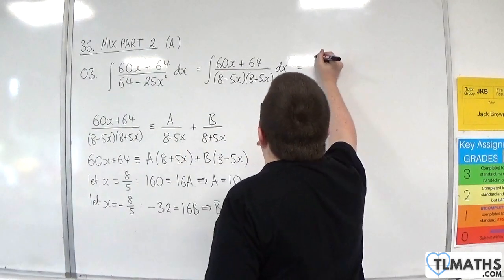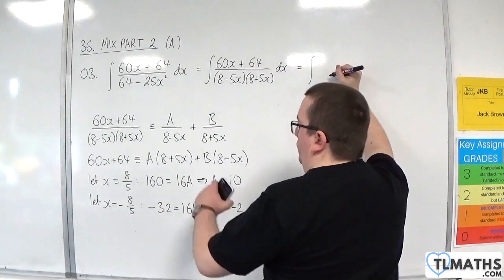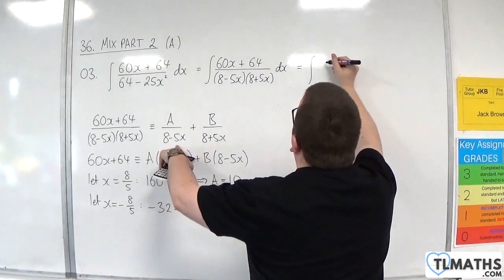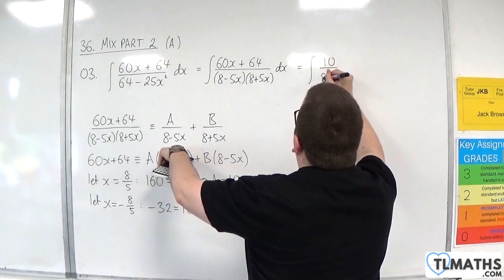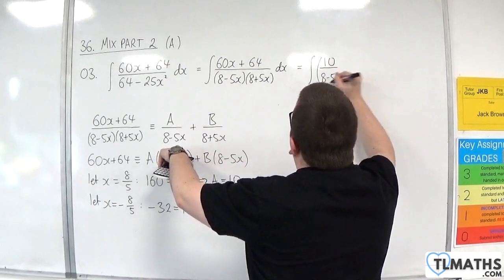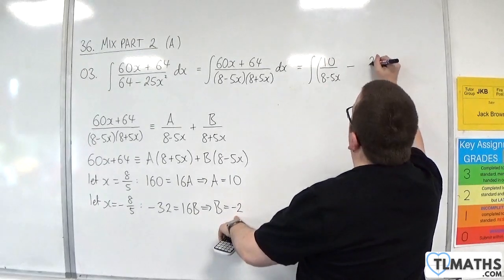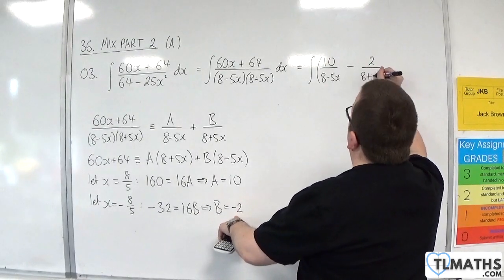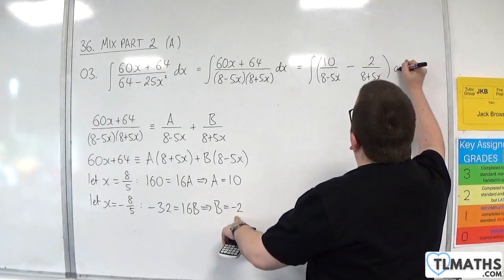So we now know that we've got the integral of 10 over 8 take away 5x, then take away 2 over 8 plus 5x dx.